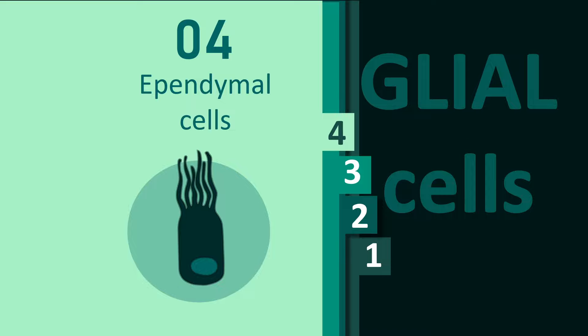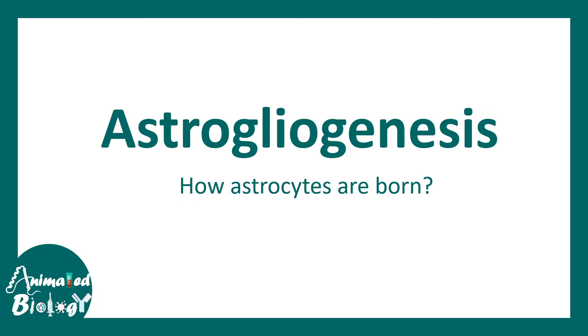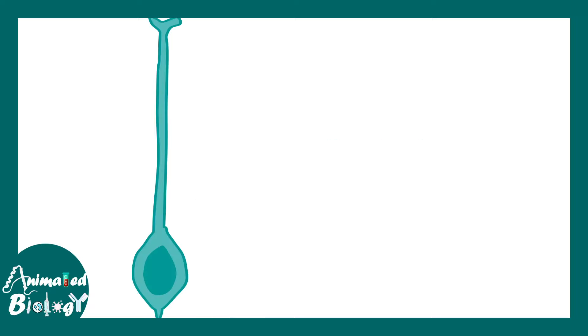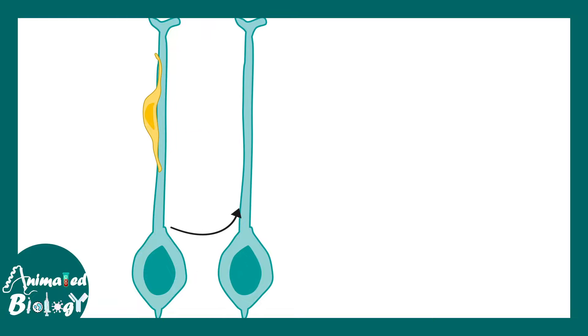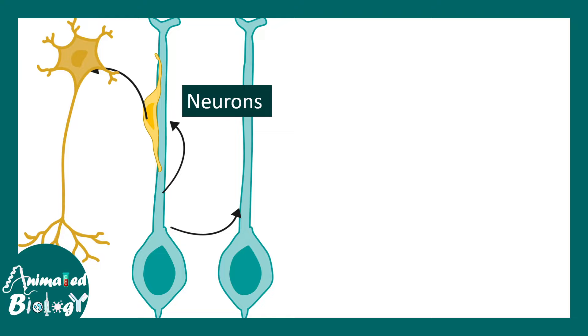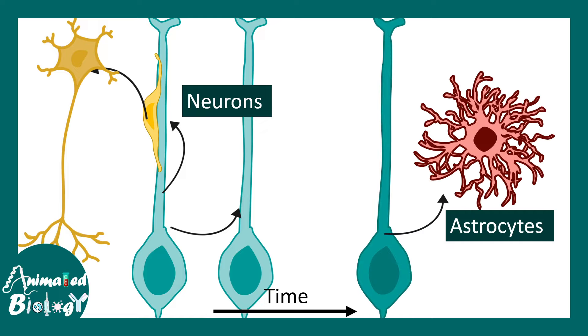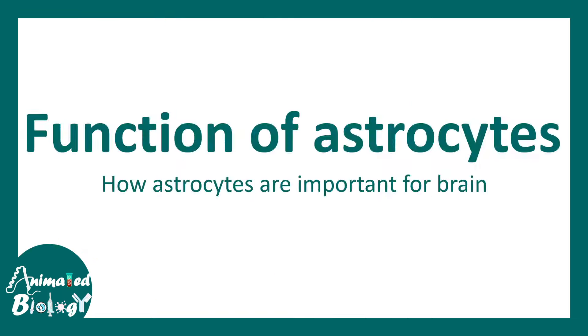First we'll talk about astrocytes, which are important glial cell types in the brain that form the blood-brain barrier. Let's talk about astrogenesis — how astrocytes are born. Astrocytes are born from radial glial progenitors in the brain. Radial glial progenitors give rise to radial glia and neurons early in the developmental timeline. Eventually, as time progresses, these radial glial cells give rise to astrocytes. So there are common progenitors for both neurons and glia in the brain.